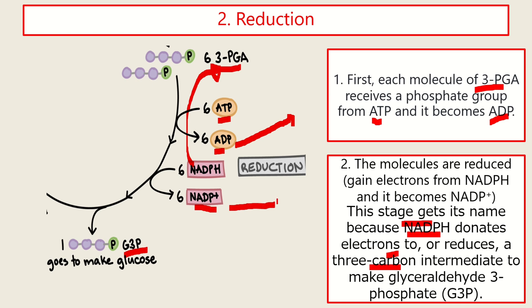So using the energy of ATP and the electrons from the NADPH, they convert the 3-PGA into G3P or glyceraldehyde 3-phosphate. This stage gets its name because of the NADPH donates electrons. We all know that when we say reduction, it is the gaining of electrons. So the 3-PGA gains electrons.